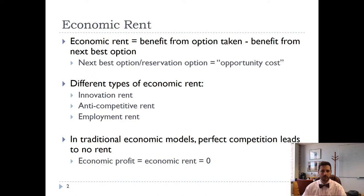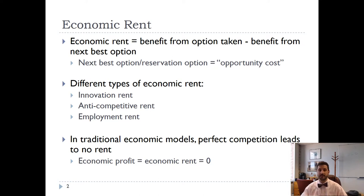We're going to talk about employment rent — that's one thing we'll cover. We're also going to talk about innovation rent. If a company comes up with an awesome new product that they can sell and earn a lot of profit, that's a kind of rent — an innovation rent. Sometimes innovation rents are protected by things like patents or copyrights, protected by law. Because if you came up with a cool new product and a competitor could just come in and make the exact same product, you wouldn't have any incentive to make that innovation.